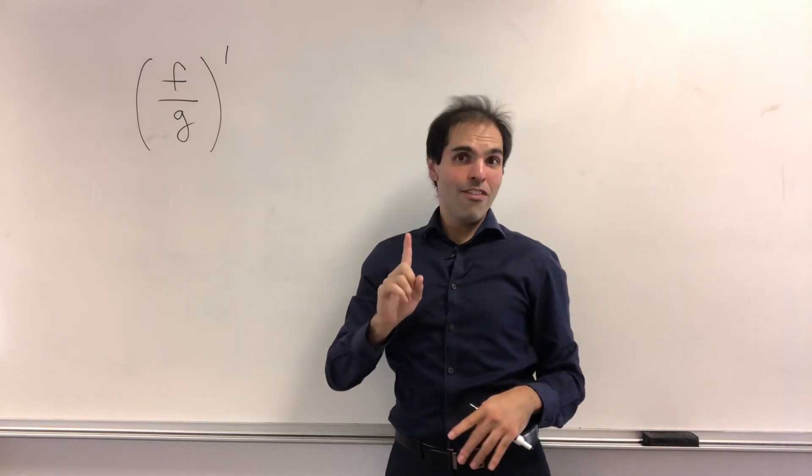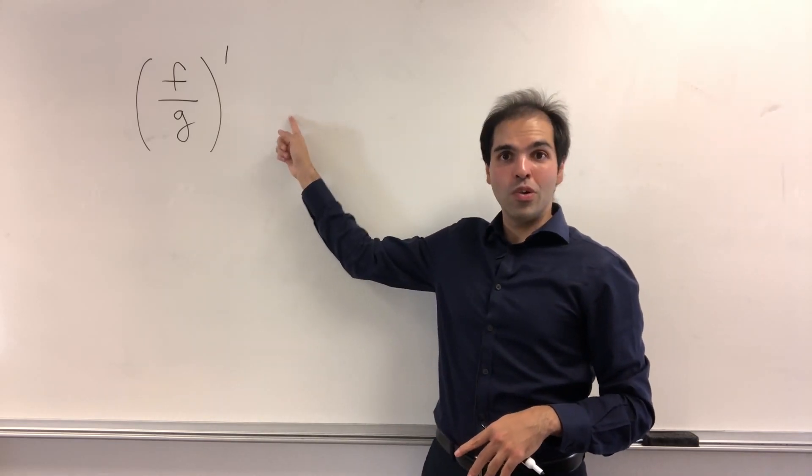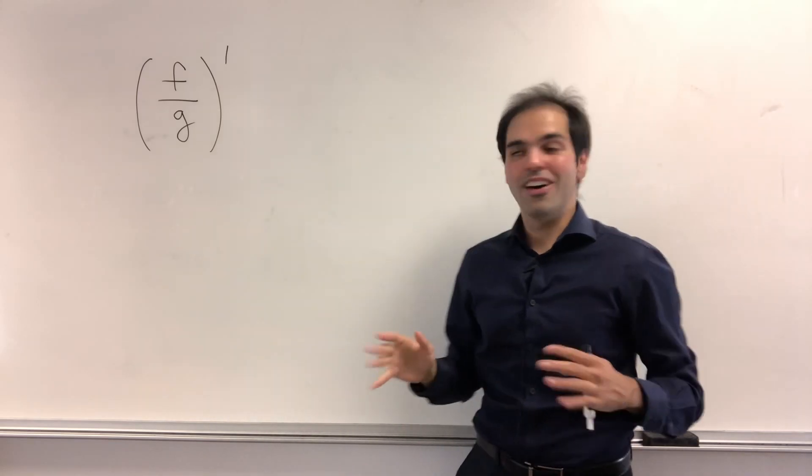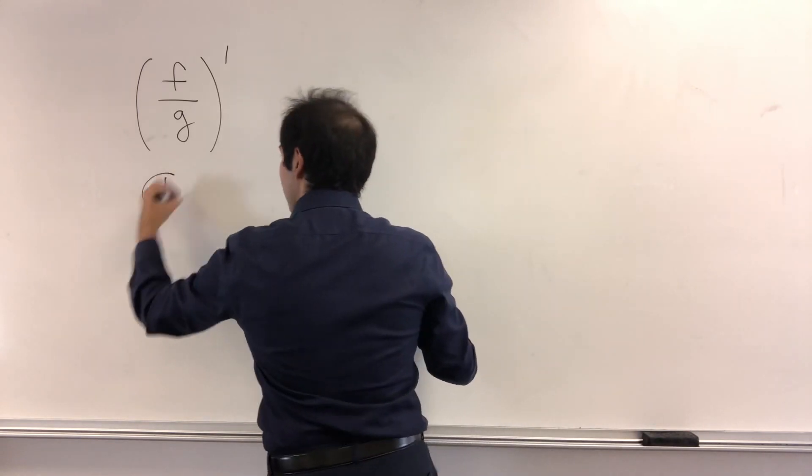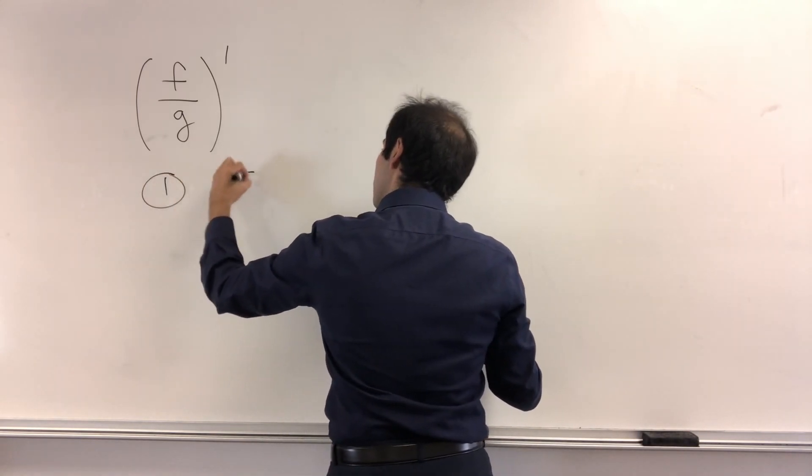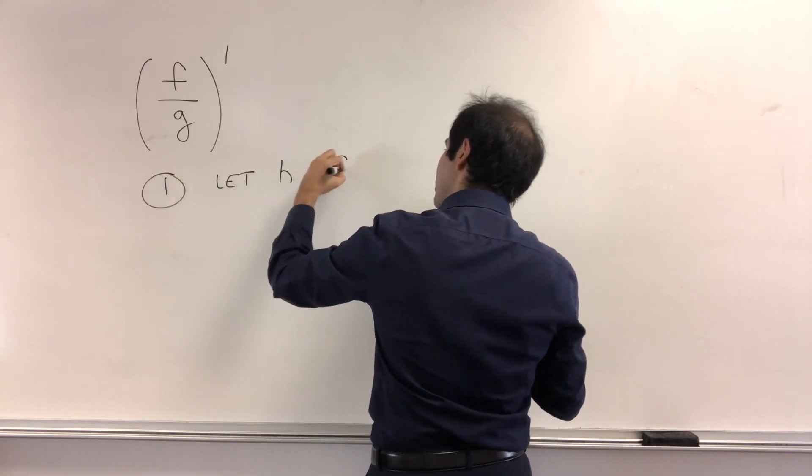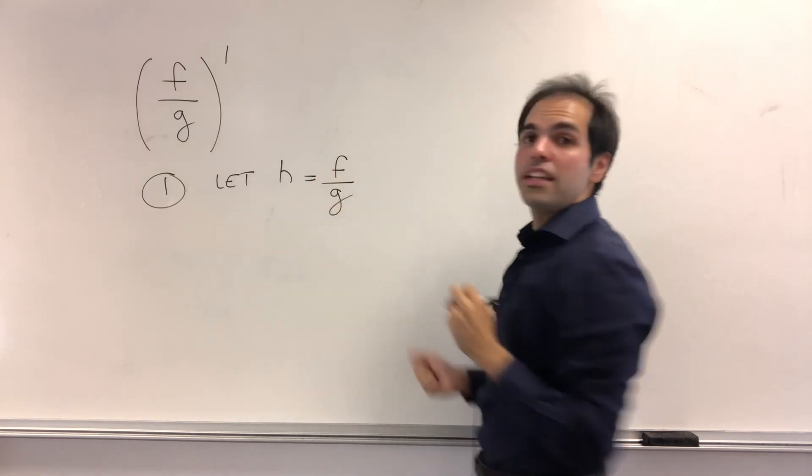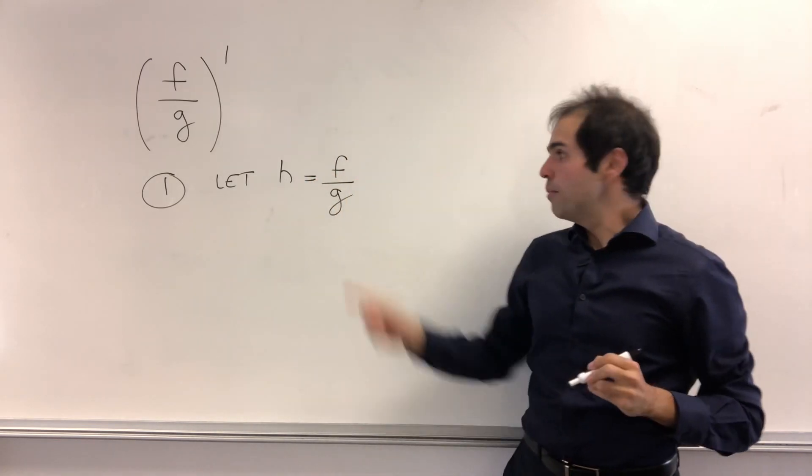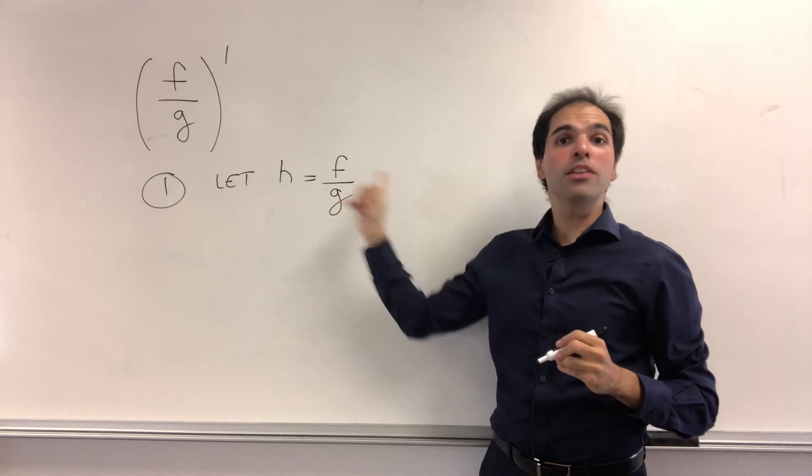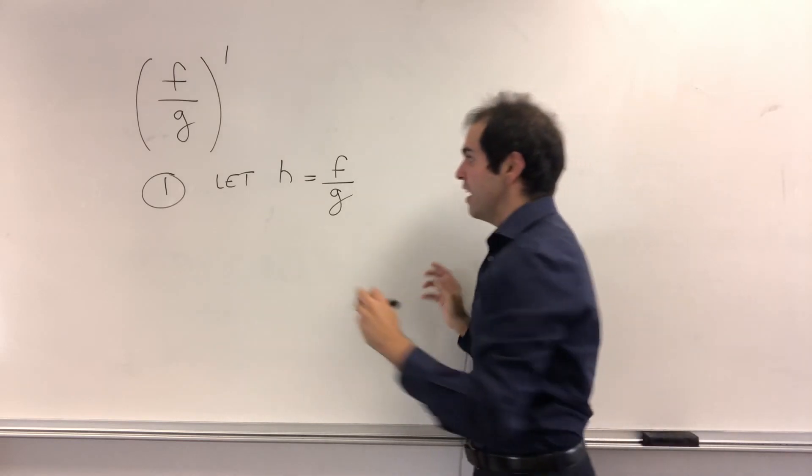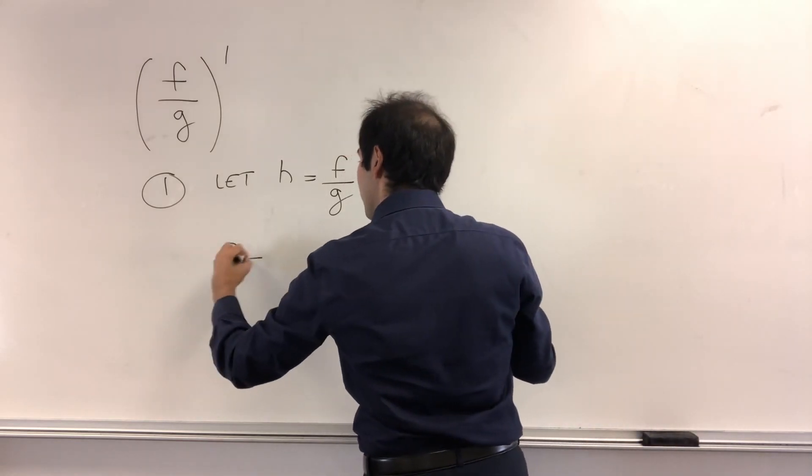So for my first magic trick, I will prove the quotient rule by using the product rule. How cool is that? Let h be f over g, and ultimately we want to find h prime. But here's a cool trick. How about you cross multiply?